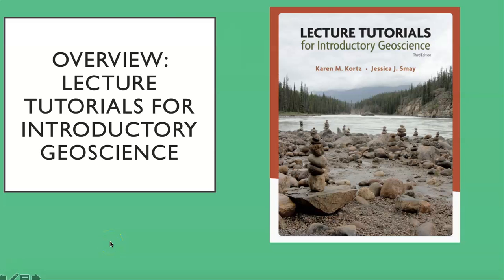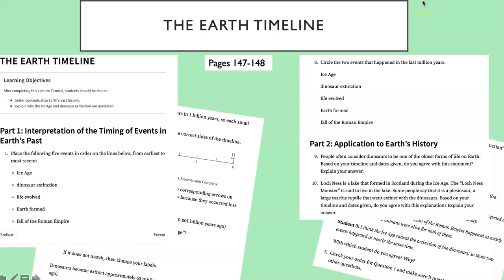So let's take a look at what these are all about. Here is the cover of the more recent edition, the third edition. You will see that in general the activities are two pages, maybe three pages long on each topic. I'd like you, if you have your book, to try pages 147 and 148 called the Earth Timeline. Go ahead and try to answer the questions that are in there and pause this video while you do that, and then watch and I'm going to give you the answers.